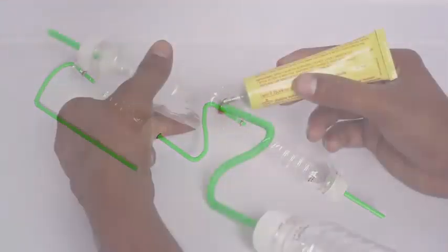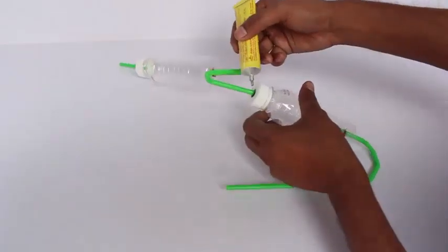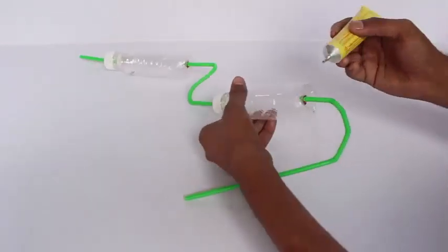After making the holes, you will seal the bottles with rubber or fevicol bond, which will prevent leakage.